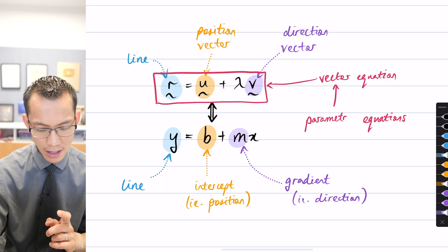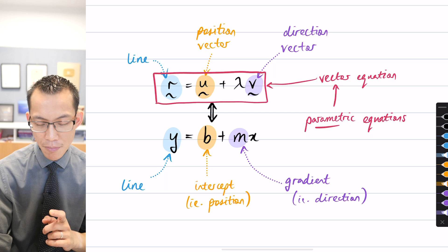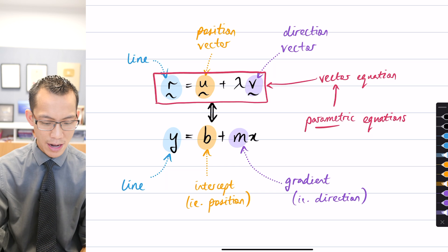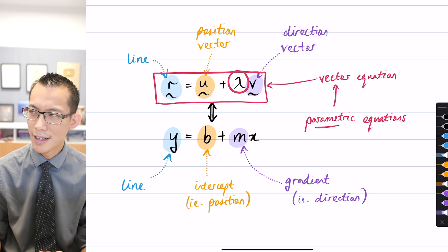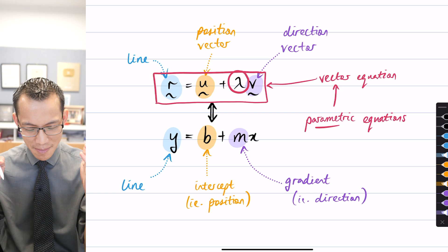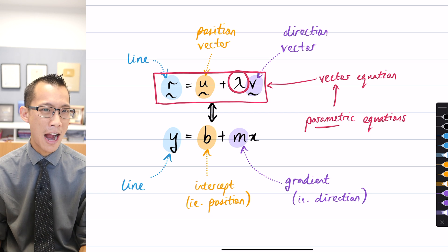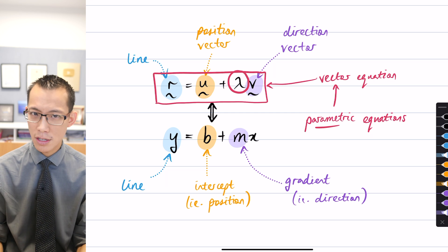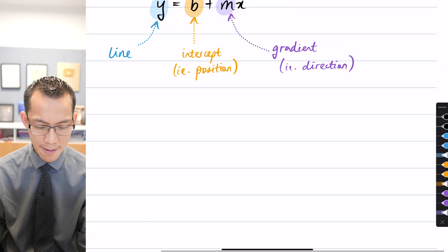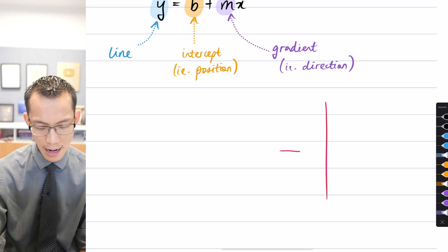These are called the parametric equations, and the parameter within parametric equations is this variable here, lambda. I'm thinking of theta because the other example of a parametric equation we've seen before is for the unit circle.